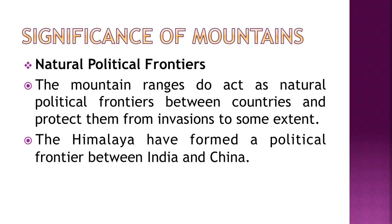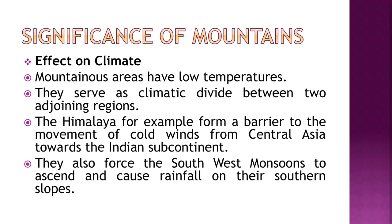Mountains have very low temperatures and serve as a climatic divide between two adjoining regions. The Himalayas, for example, form a barrier to the movement of cold winds from Central Asia towards the Indian subcontinent. They also force the southwest monsoons to ascend and cause rainfall on the southern slopes.